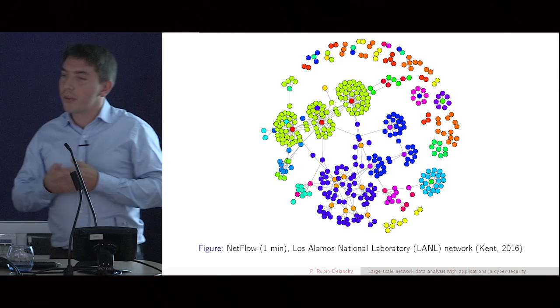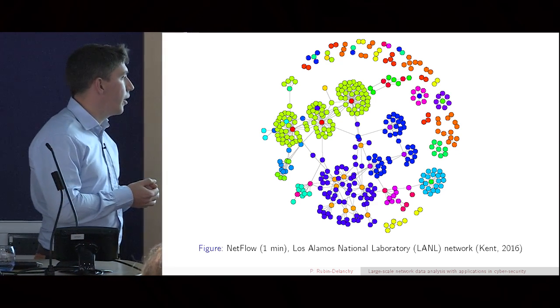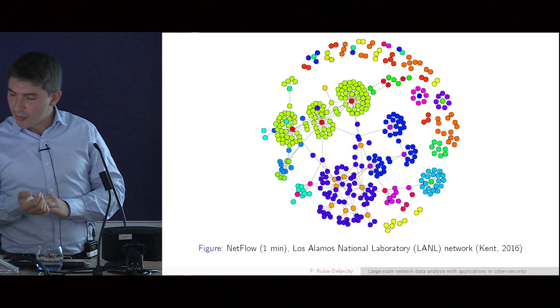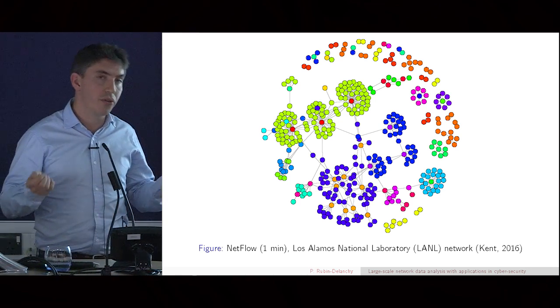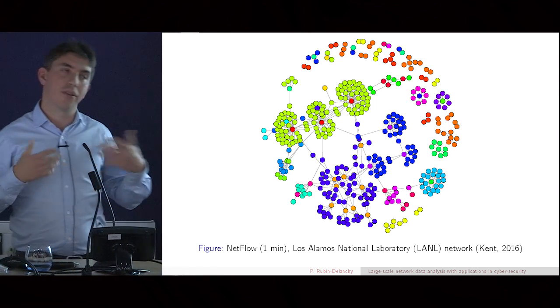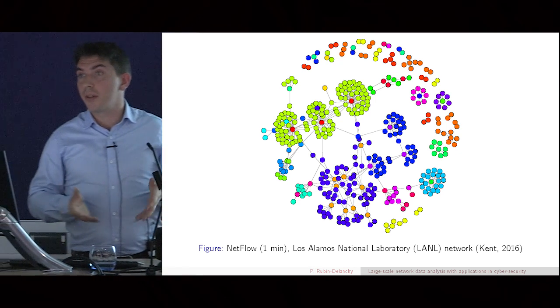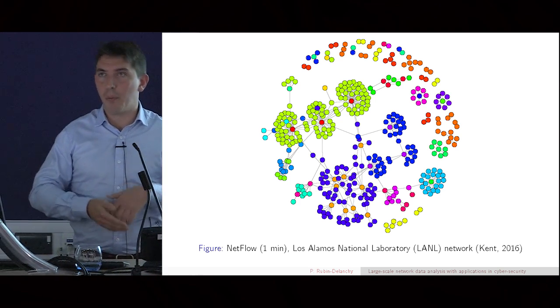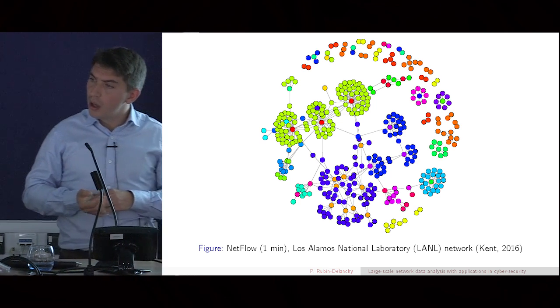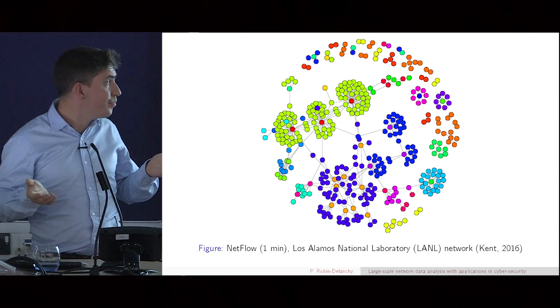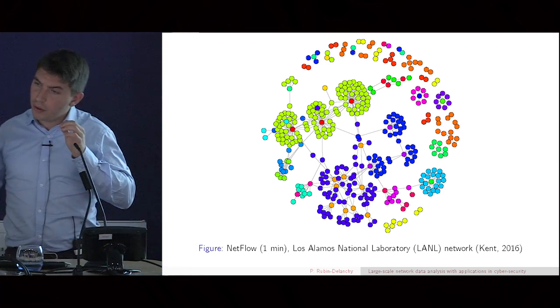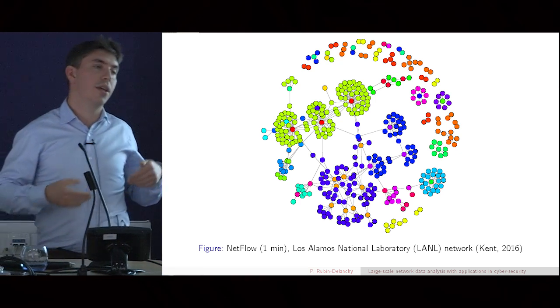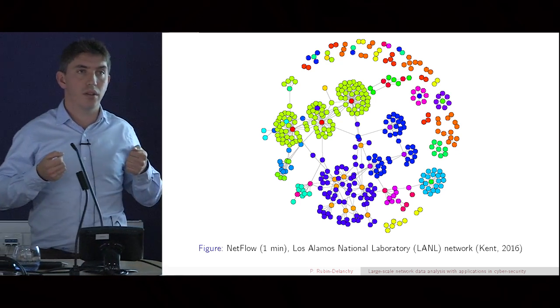So this is an example of cyber security data. Los Alamos National Lab are famous for having invented the first nuclear weapons and therefore have very serious cyber security concerns. They've actually recently released public data about their network and their computer traffic in the hope that it will help statistical researchers develop methods for this problem. What you're looking at here is a graph. The nodes are computers, and the links just indicate that the computers have communicated in the one minute I'm looking at them.